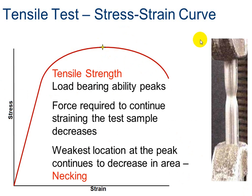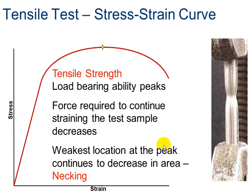Tensile strength is the point right at the very top of the deformation region, where your load-bearing ability peaks. Put a star here and label it tensile strength. This is the final point where you're taking your weakest point and making it stronger. After this, the force required to continue straining the test sample decreases. The weakest location continues to decrease in area — this is called necking. Here's an example of what necking looks like: indentions on the side just before it breaks apart.